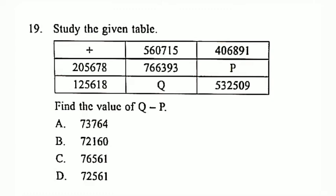To find any number in this table, note that a plus sign is given at the top left corner. To find any number in the table, we must look at the first row and first column where that number is located. For example, P is in the second row and third column. In the second row, the first number is 205,678. The first number in the third column is 406,891. We have to add both numbers.